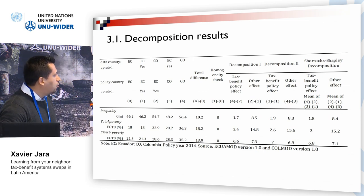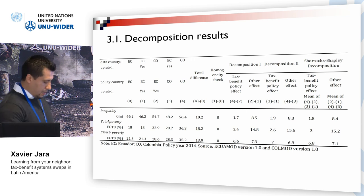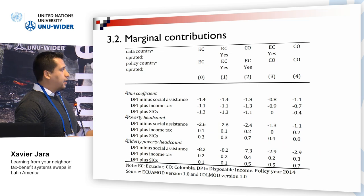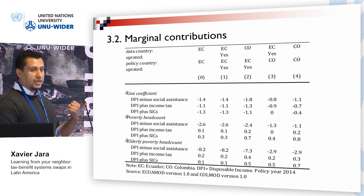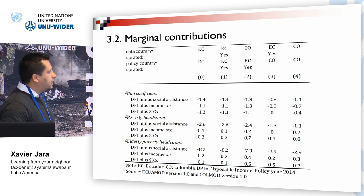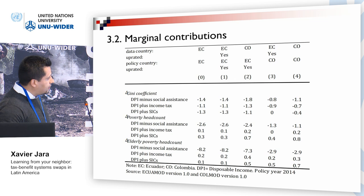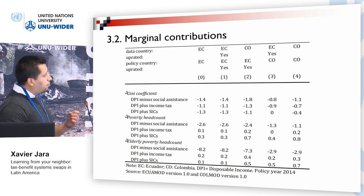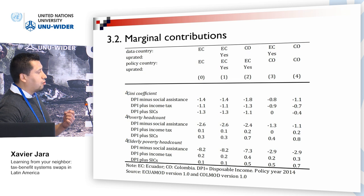The largest impact of tax benefit rules is seen for elderly poverty. Comparing the Gini coefficient of disposable income with and without each tax and benefit instrument gives the marginal contribution of each component, and we see that social assistance is driving most of the differences in both income inequality and poverty. Social assistance in Colombia's baseline reduces elderly poverty by 2.9 points, whereas if Ecuador's tax and benefit policies were applied to Colombia's population, social assistance from Ecuador would reduce elderly poverty in Colombia by 7.3 points.